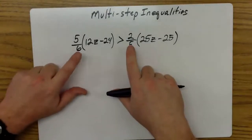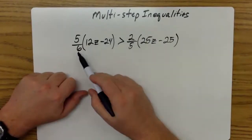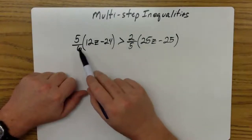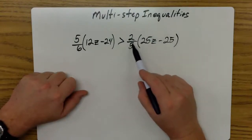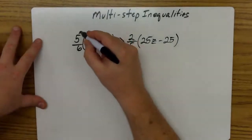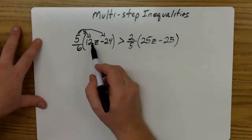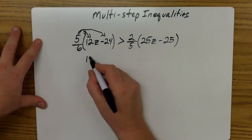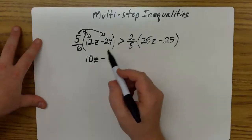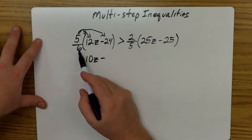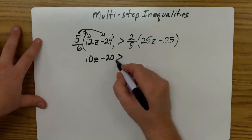Now normally we like to clear our fractions instead of distributing them out. But if we look ahead, this 12 and this 24 are both multiples of 6. So by distributing my 5/6, I will actually simplify the problem. Same thing happens over here. Both of these 25s are multiples of 5. So by distributing my 2/5, it will self-clear. So we're going to distribute the 5/6 to both of these. 5/6 times 12 is going to give us 10z. 5/6 of 24 is 20, so that's -20, greater than. Distribute my 2/5 to my 25, that's 10z. And 2/5 times -25 is -10.